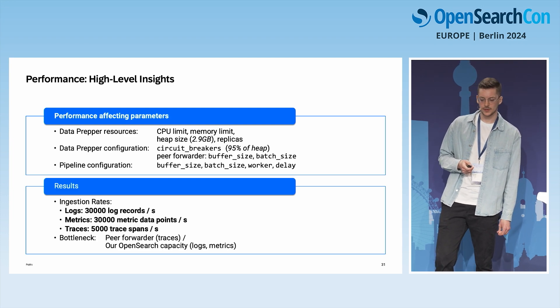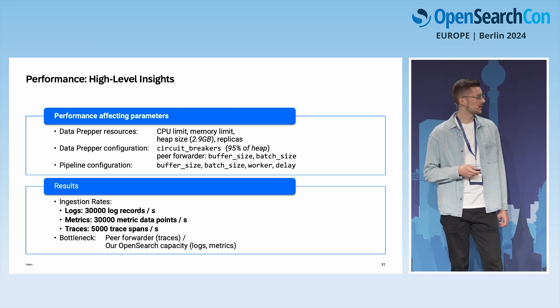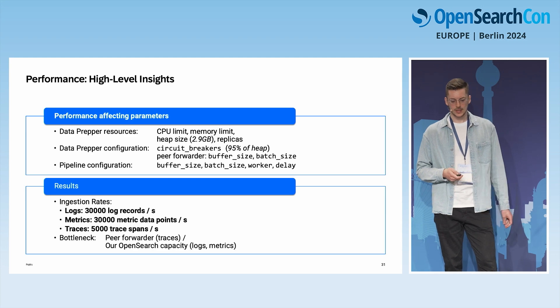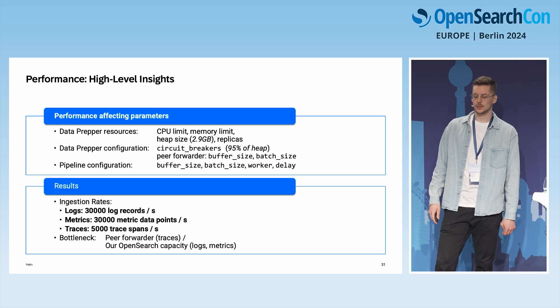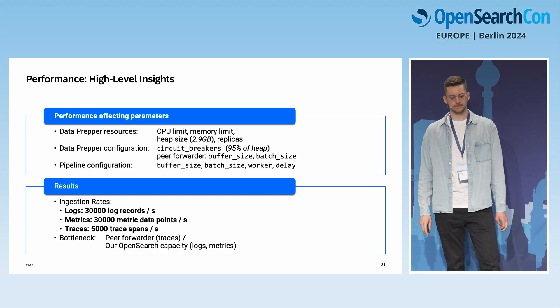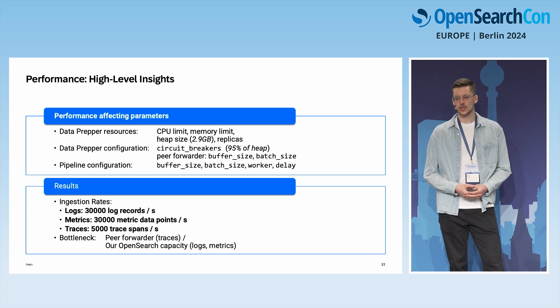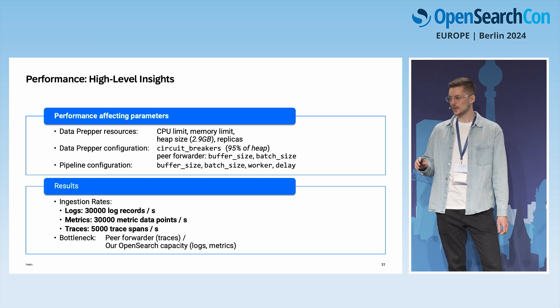For the pipeline configuration, the relevant parameters are buffer size, batch size, number of workers, and the delay you can configure. Coming to some results: we tested many different configurations. With roughly 2.9 gigabytes heap size for one DataPrepper instance and two instances total, for logs and metrics we observed ingestion rates up to 30,000 log events and metric data points per second. For traces, it is still very good at 5,000 trace spans per second, but not as high as for logs and metrics.